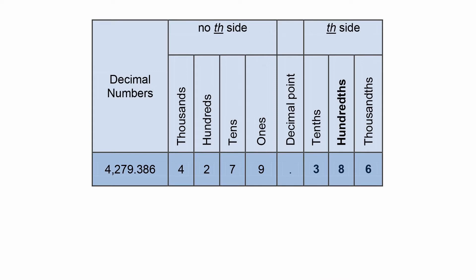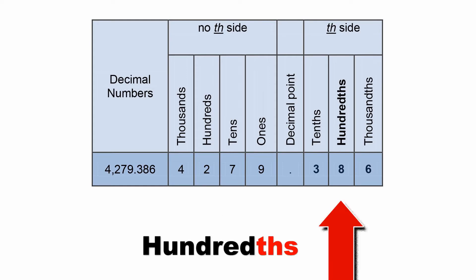One space is the tenths and then to the left of the decimal is the ones, tens, hundreds with an s. So that's the difference. This is hundreds. This is hundredths. And hundredths is what we're dealing with. This one.